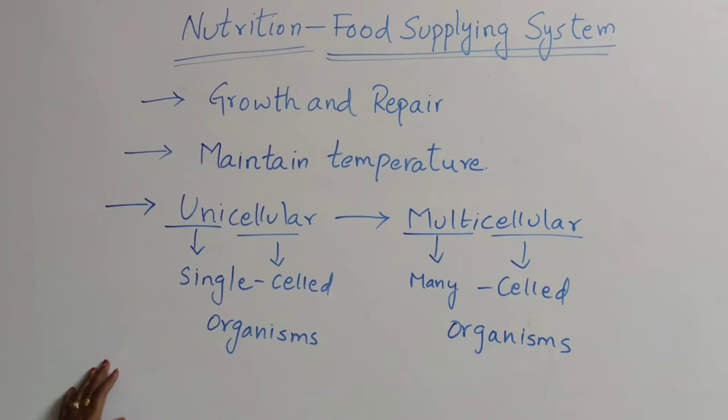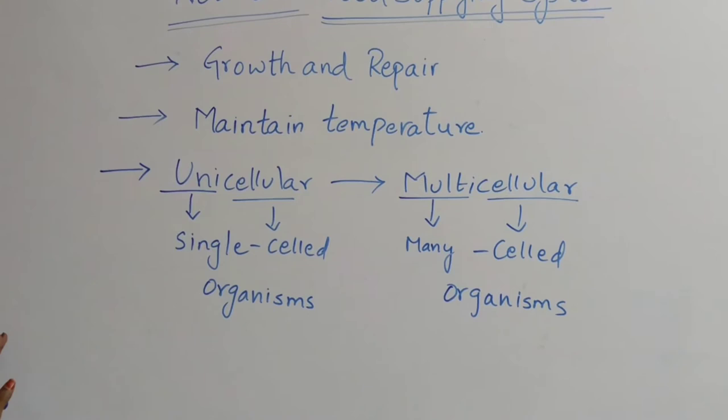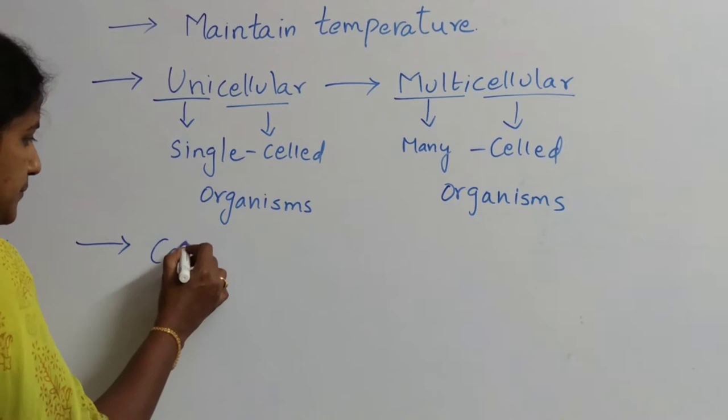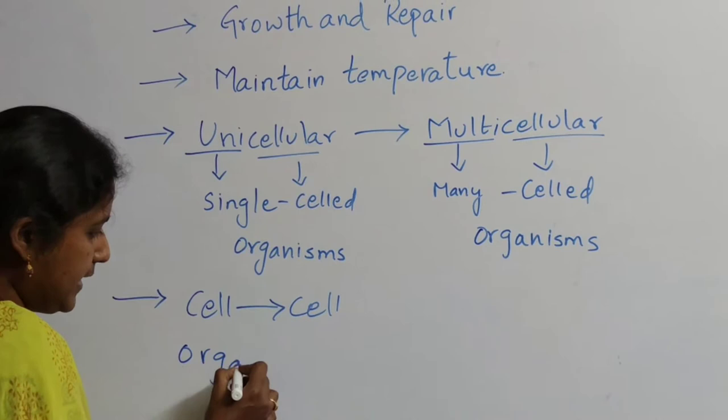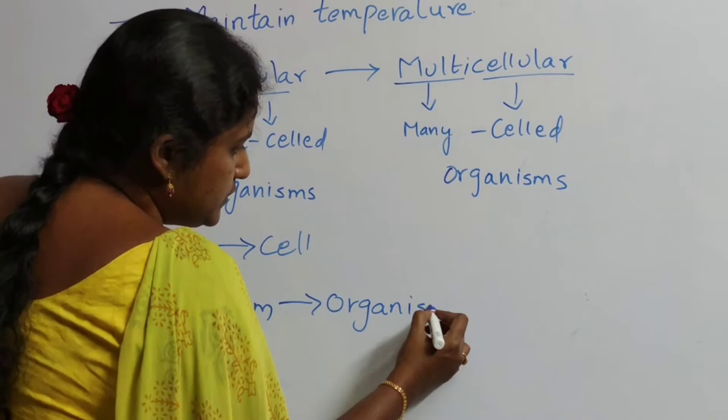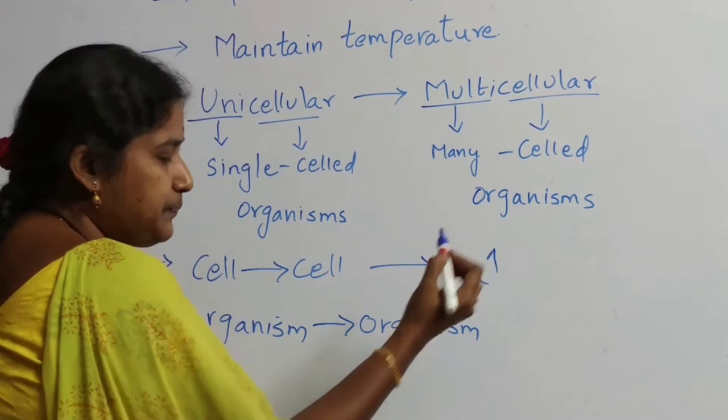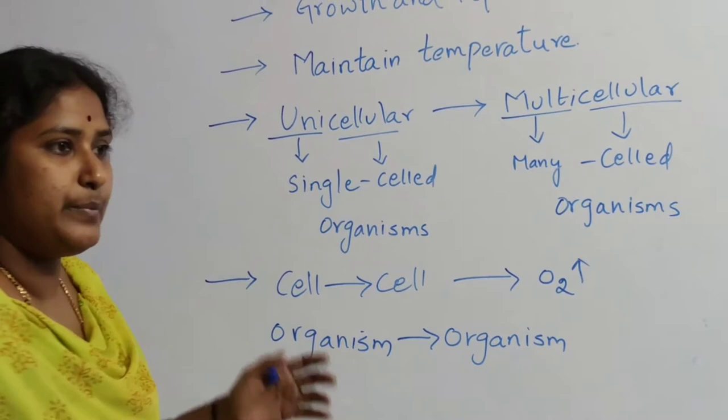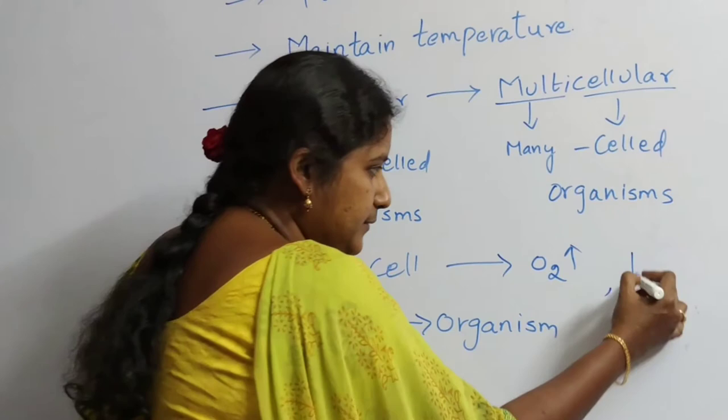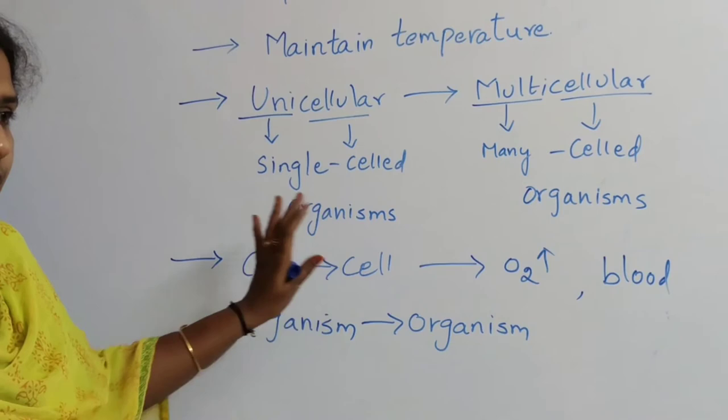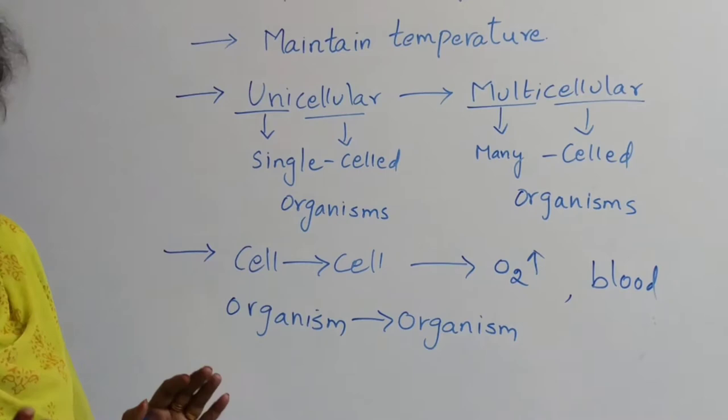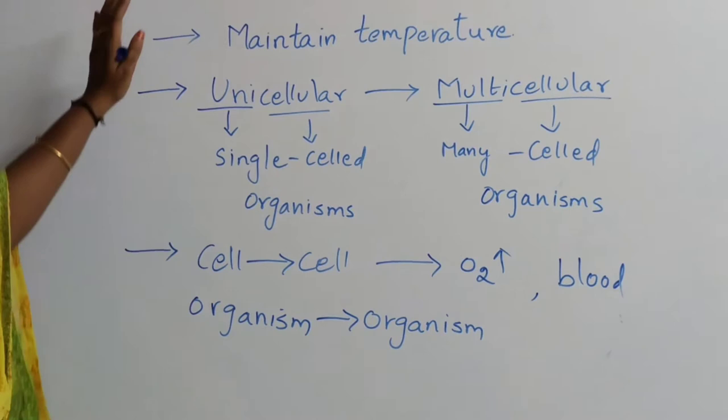It differs from unicellular organisms to multicellular organisms, and the consumption of food varies from cell to cell. It differs from cell to cell and organism to organism. For example, my brain cells require more oxygen. My nerves require blood. The nutrition which we eat is varied from cell to cell and organism to organism. Based on this, mode of nutrition is of two types.